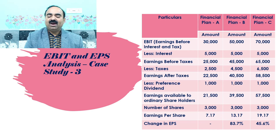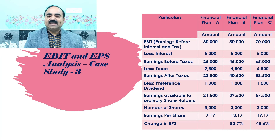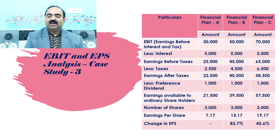The number of shares in the company are 3,000. We got earnings per share of ₹7.17 under financial plan A, by dividing earnings available to ordinary shareholders of ₹21,500 by number of shares of 3,000. Similarly, we got ₹13.17 earning per share for financial plan B, and ₹19.17 earning per share for financial plan C. We were asked to calculate change in EPS, which is 83.7% for financial plan B and 45.6% for financial plan C.